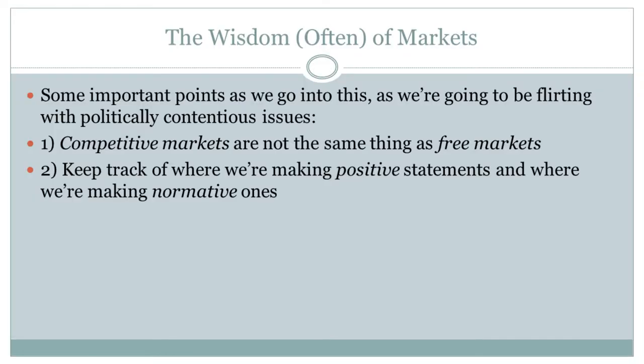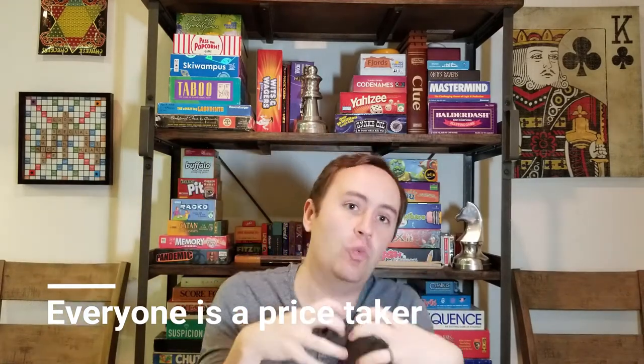First thing to remember is that we're talking here about competitive markets — why competitive markets are a good way to allocate stuff and to decide what stuff gets made. Importantly, competitive markets are not the same thing as free markets. Typically when you're having a political discussion about how much markets should be allowed to do, the topic is free markets — a market that has no government intervention. But what we're talking about here are competitive markets, where the market is so large relative to each individual supplier that nobody has control over the price. Everybody is a price taker — you're just one little atom in this very big market.